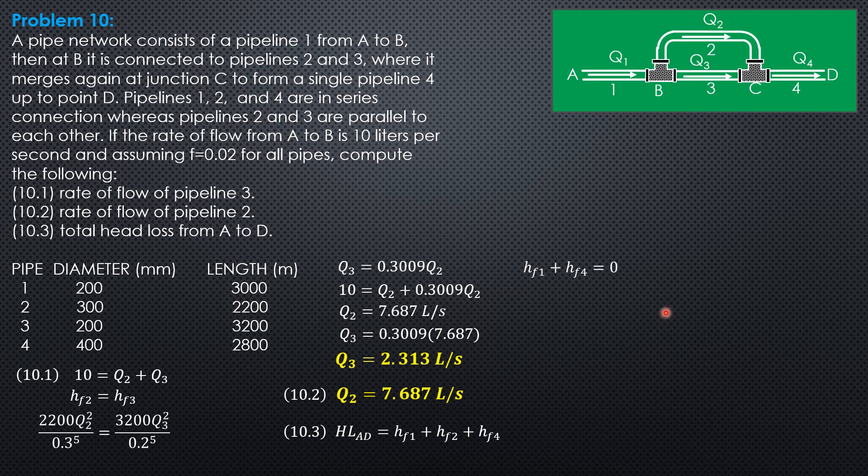So, HF1 plus HF4 is 0.0826 times 0.02 times discharge 0.01, 10 liters per second for pipes 1 and 4. Quantity length of pipe 1, 3,000 over diameter 0.2 to the 5th plus length of pipe 4, 2,800 diameter 0.4 to the 5th. So, HF1 plus HF4 combined is equal to 1.594 meters.